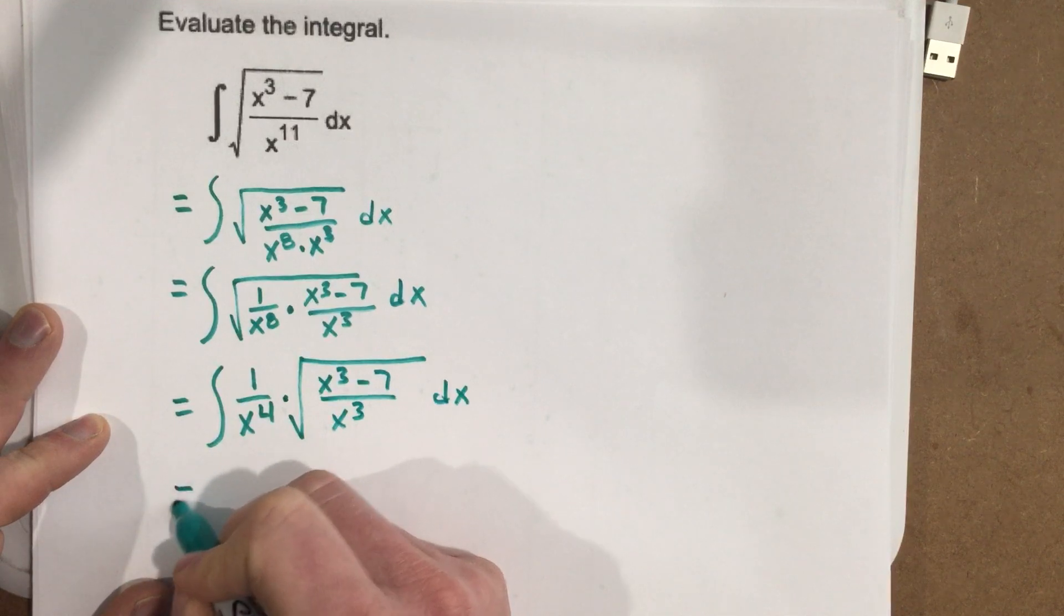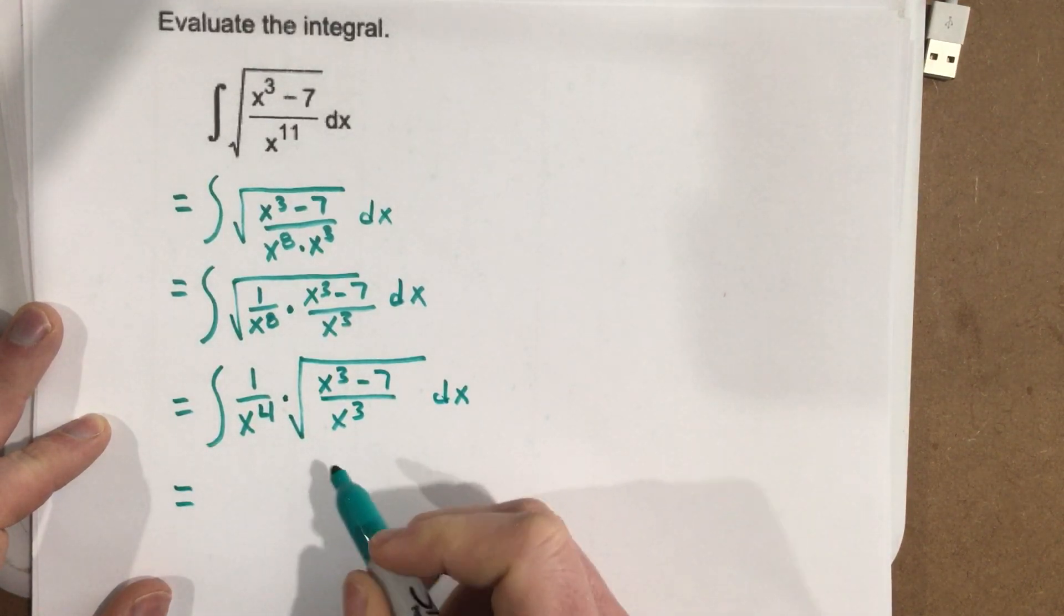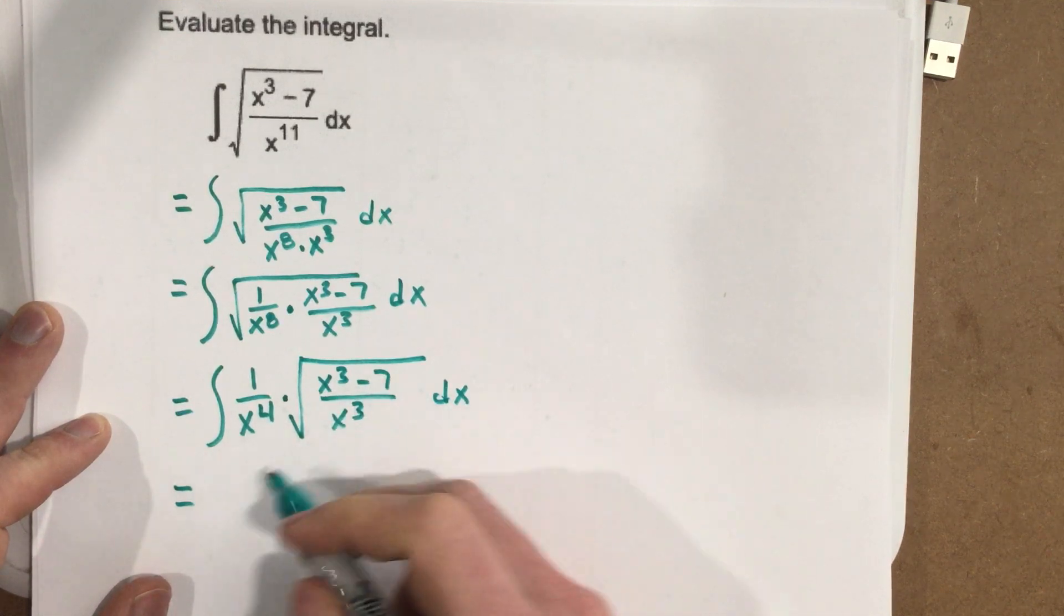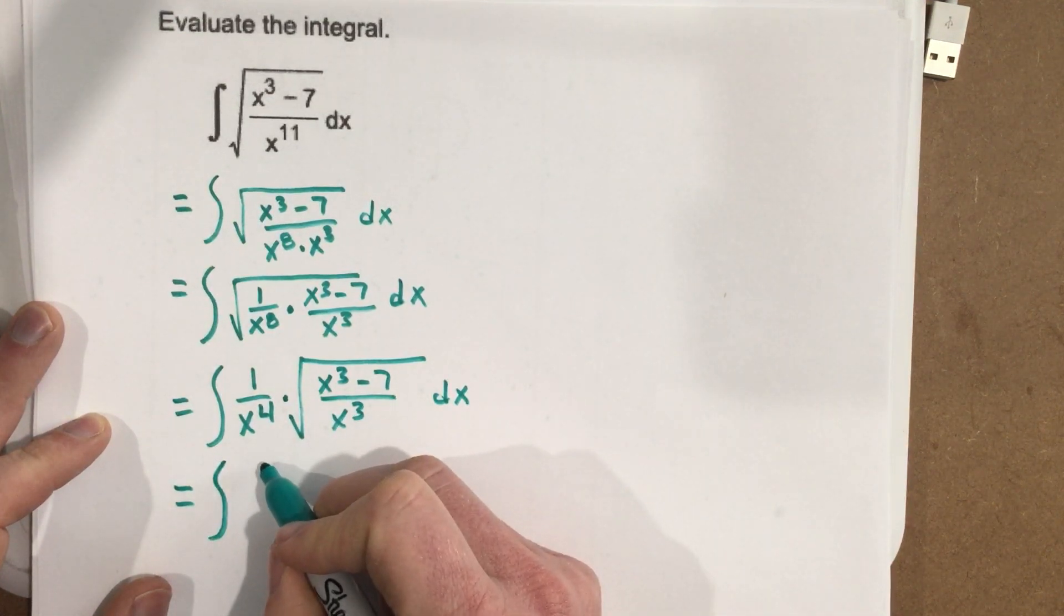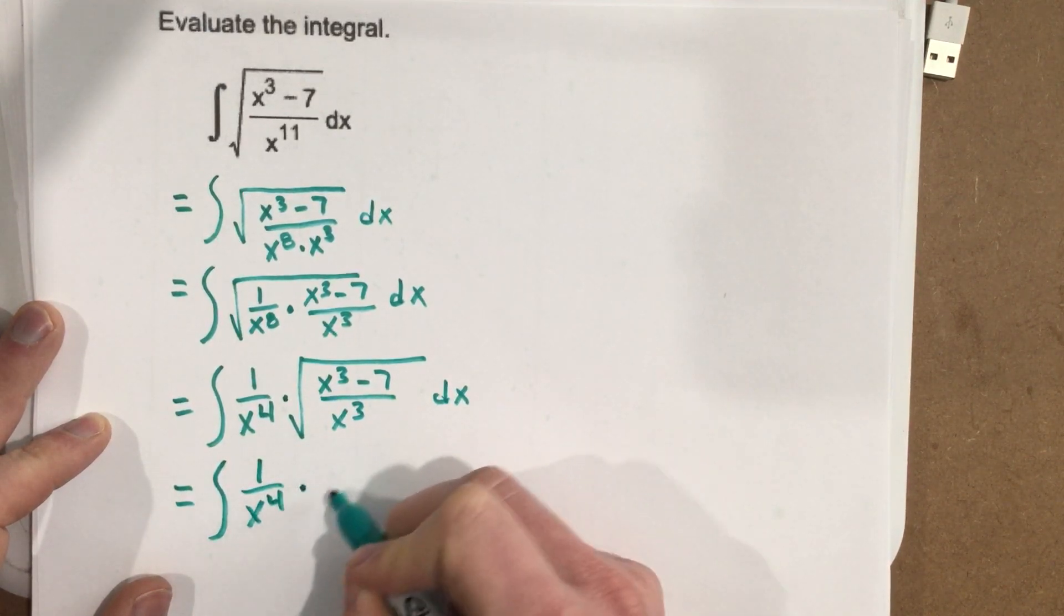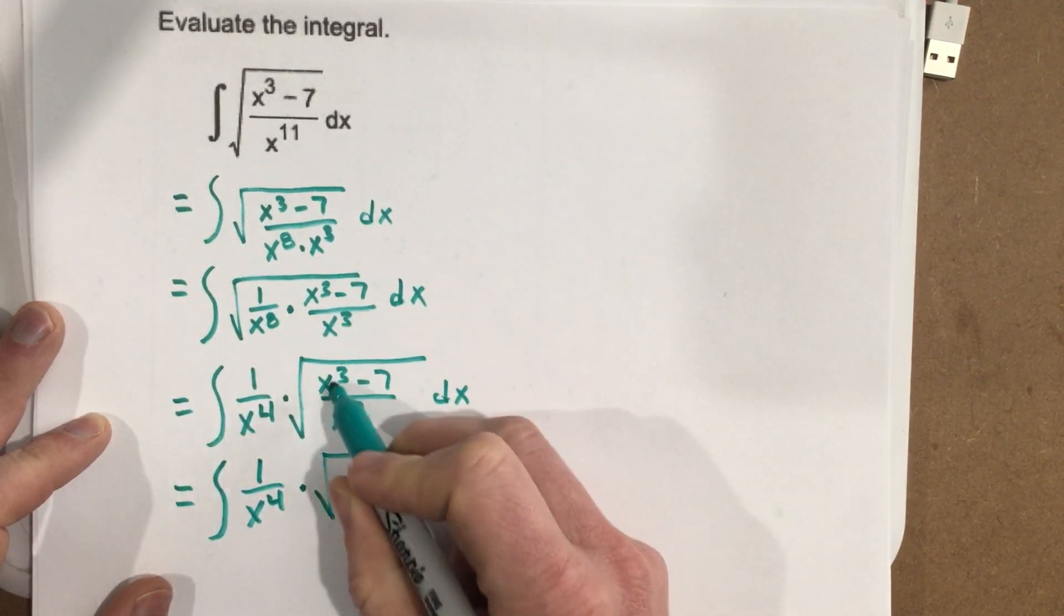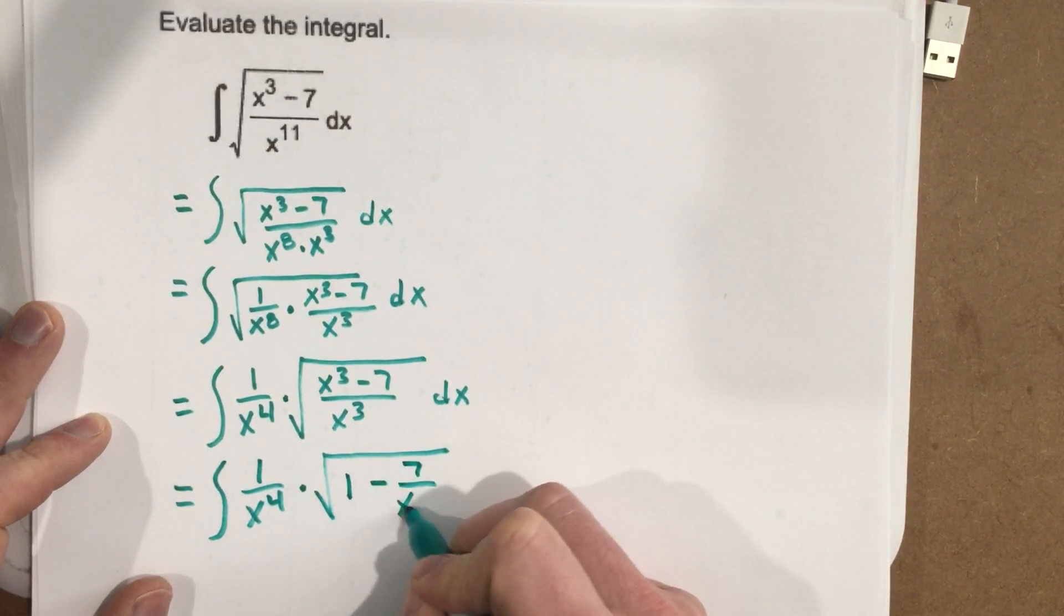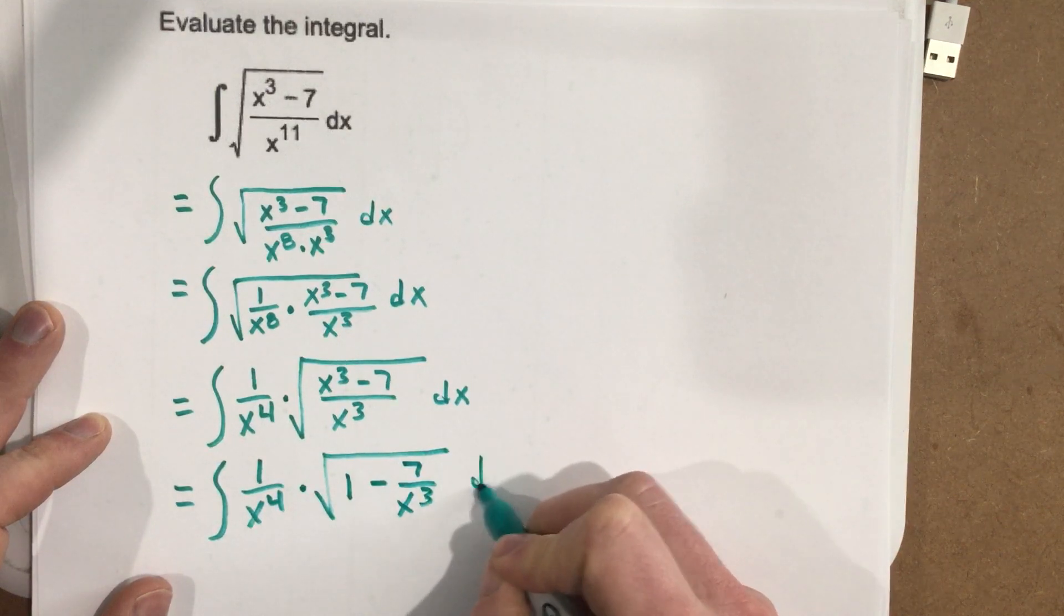And then I can write that as, when I reduce here, I can separate that, and I can say that that is 1 over x to the fourth times root, when I reduce here, x cubed over x cubed is 1 minus 7 over x cubed dx.